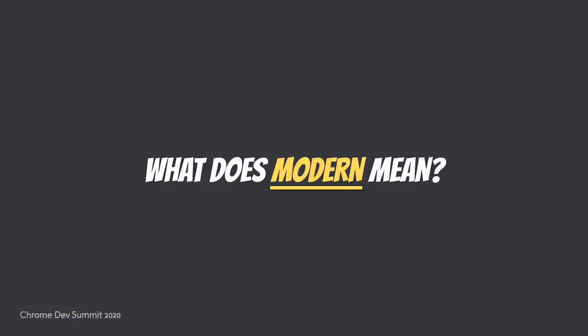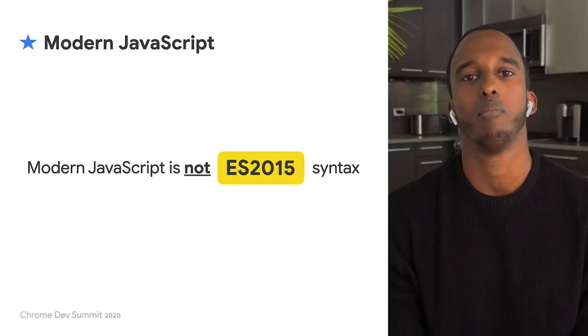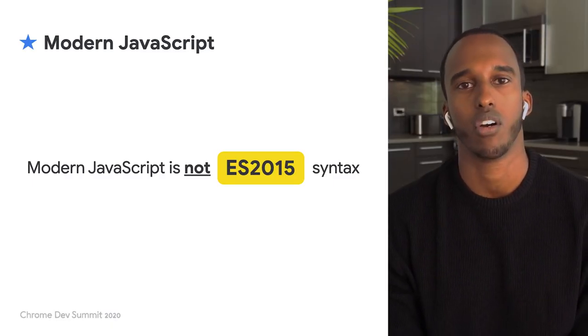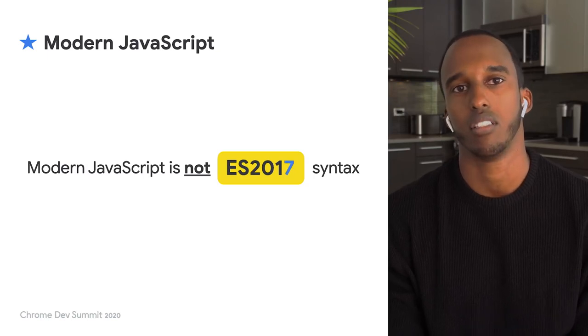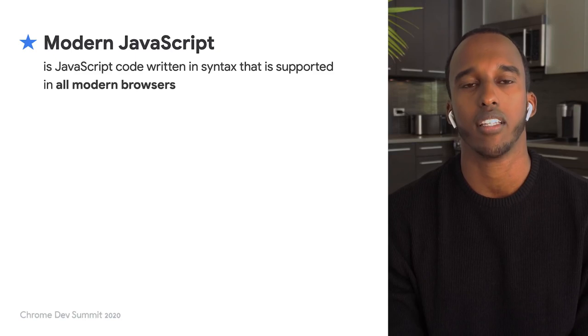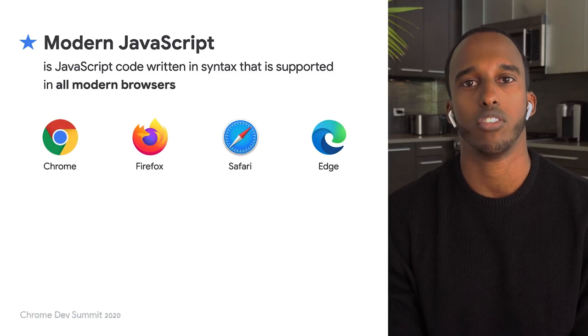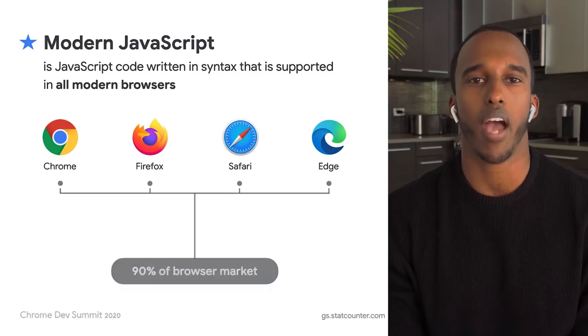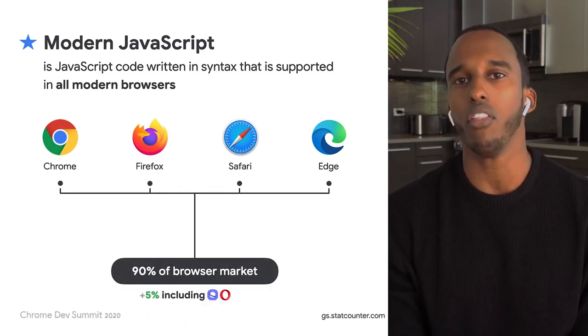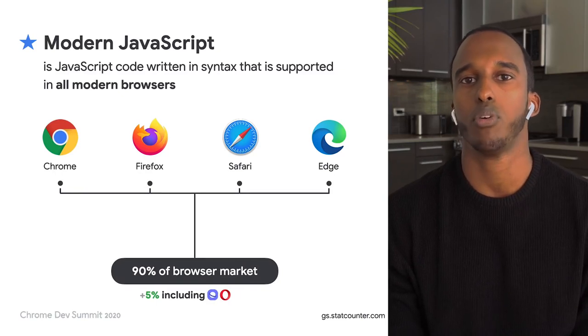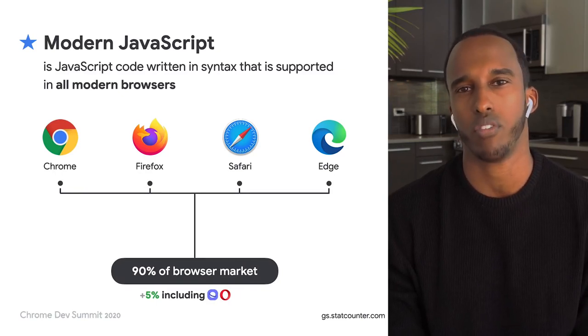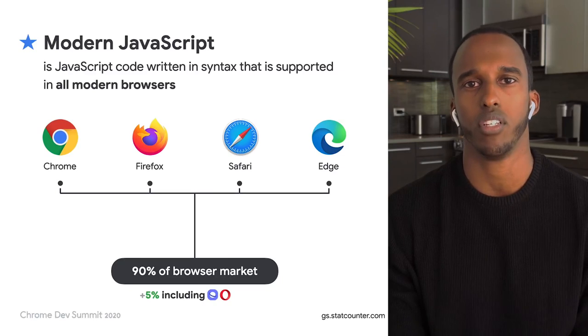That kind of begs the question — what exactly do we mean when we say modern code? Modern JavaScript is not ES2015 syntax, or ES2017, or even ES2020. It's code written with syntax that is supported in all modern browsers. Right now Chrome, Edge, Firefox, and Safari make up 90% of the browser market, and another 5% comes from browsers based on the same rendering engines, which support roughly the same features.